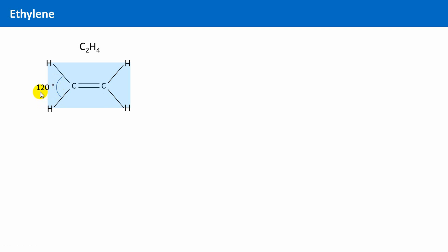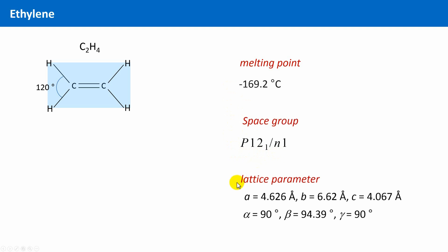We will take a look at its structure more closely in a second. At room temperature it is a gas. However, if you cool it down to approximately minus 170 degrees Celsius, which is actually pretty cold, then even ethylene crystallizes, namely in the space group P21/n, with these specified lattice parameters.